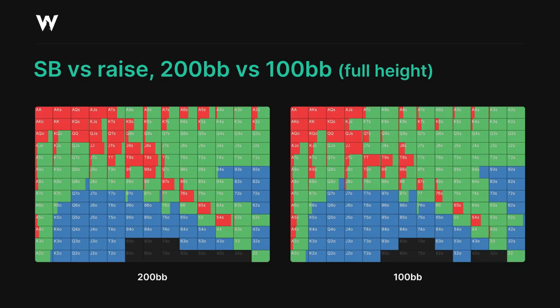The only major difference here is that the 200 big blind spot requires the small blind to limp 3-bet with a slightly more linear range, including some suited hands instead of the offsuit aces you can see on the right. But overall, the value 3-bet range is consistent, and so are most of the calls and folds. We're prioritizing two things in the limp 3-bet range: board coverage and blocking power.